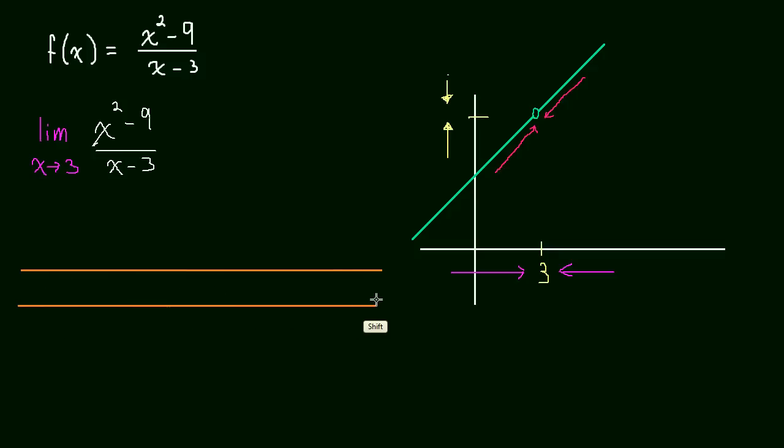So we're going to take an estimate. What we're going to do is we're going to pick x values really close to 3 and we're going to see what happens. So not only are they going to be really close to 3, but they're going to actually be getting closer to 3.